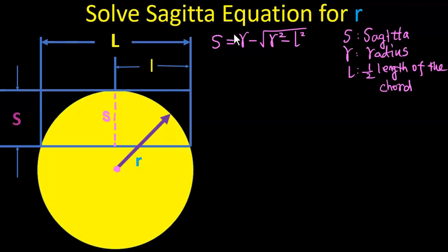First, isolate the radical term. If we subtract r from both sides of the equation, we can accomplish that. We have on the left hand side s minus r equals negative square root of r squared minus l squared.